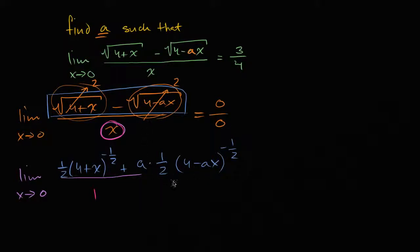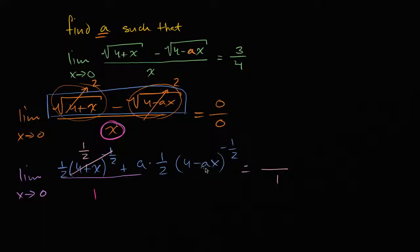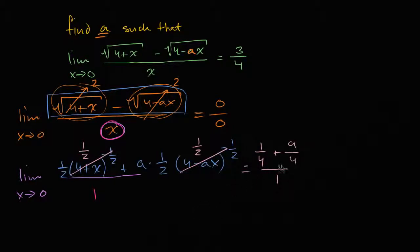So what is this going to be? This is going to be something over one. As x approaches zero, four plus zero to the negative one half is four to the negative one half, which is one half. And four minus zero to the negative one half is also one half. So we have one half times one half, which is one fourth, plus a times one half times one half, which is a over four. This simplifies to a plus one over four.